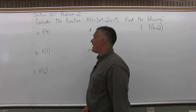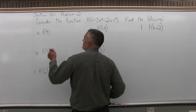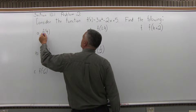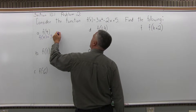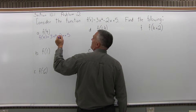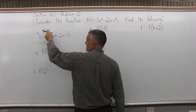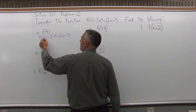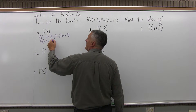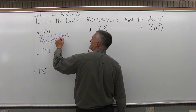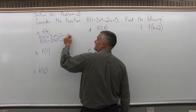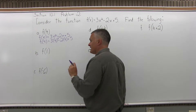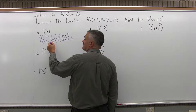Part a says find f of 4. So I'll take the function f of x equals 3x squared minus 2x plus 5. Everywhere I have an x, put in a 4 — that's what f of 4 means. So f of 4 equals 3 times 4 squared minus 2 times 4 plus 5. 4 squared is 16, times 3 is 48.